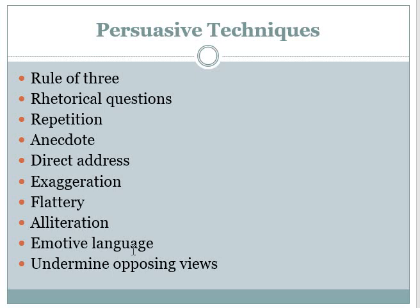Emotive language is the language used to make you emotional — and emotional does not only mean sad. It means all emotions like sadness, happiness, excitement, and anger. Emotive language is the language used to make someone emotional about something. The last technique is undermining opposing views, which means you are weakening and negating the view that is opposite to you. If someone has a point that does not suit you, you are supposed to negate that point and prove that you are correct. These are the techniques used in formal letter.